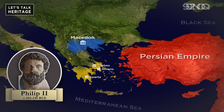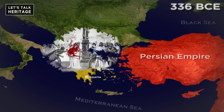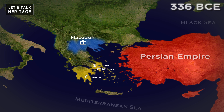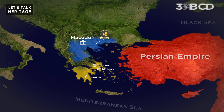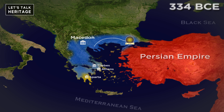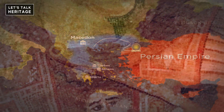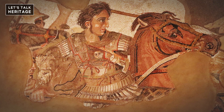So Philip planned the invasion of the Persian Empire. But in 336 BCE, before Philip could begin his military campaign against Persia, he was assassinated. His 20-year-old son inherited the kingdom, a strong army, and his father's dream of invading Persia. He secured his position as the new king for the next two years, and in 334 BCE, he led his father's army into Persian territory. This new young Macedonian king was Alexander.